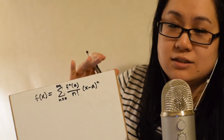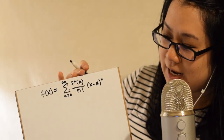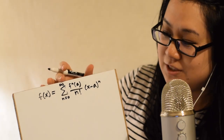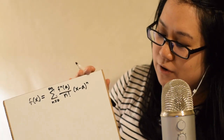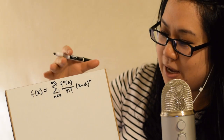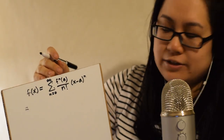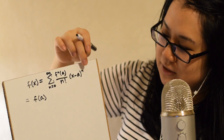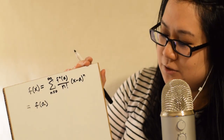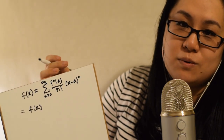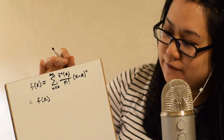This is the Taylor series expansion about x equals a. We can't write out every single term since it's an infinite sum, but let's write out a few. Starting with n equals zero: there's not really such a thing as the zeroth derivative, so f superscript zero of a is just f of a. Divided by zero factorial — which is one — times x minus a to the power of zero — also one — so those go away and we just have f of a.